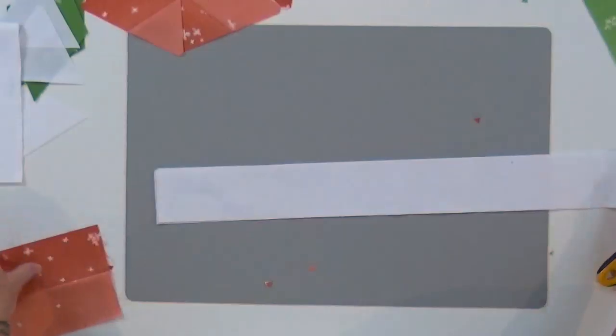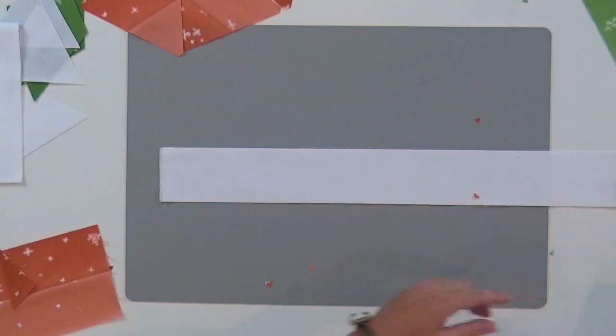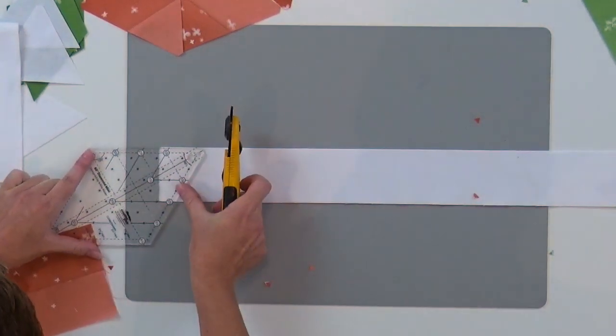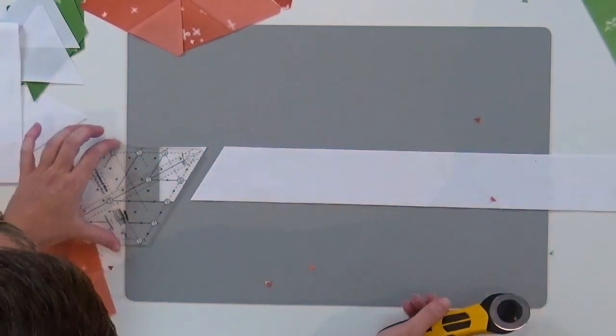Some of the other things that we can do like the background cuts. Here I have a background white strip. I'm just going to use the end of the ruler to trim it off at a 60 degree angle. Just like that. That gets me started.